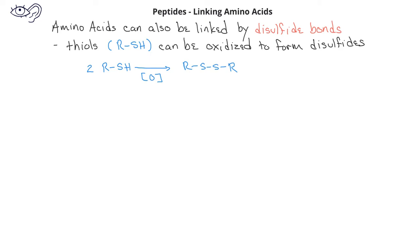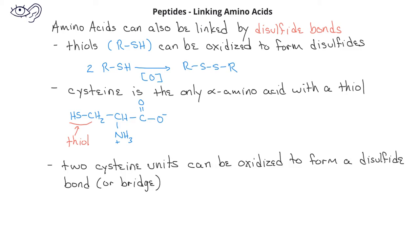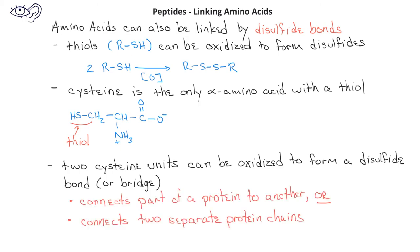Cysteine is the only alpha amino acid that has a thiol functional group on its side chain. Two cysteine units can be oxidized to form a disulfide bond, or a disulfide bridge, which provides structure to protein chains by connecting one part of the chain to another. Disulfide bonds can also connect separate protein chains or peptide chains to each other.